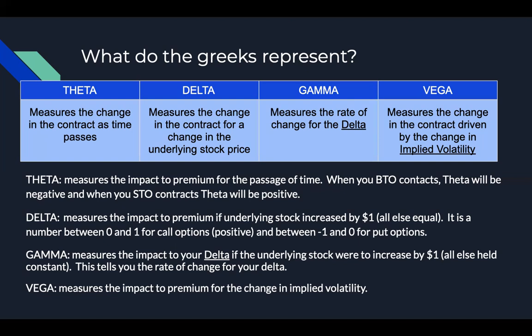Theta is what we'll start things off with. This is pretty straightforward — it essentially measures the change in the contract as time passes. This is like the cost of swinging the option overnight; that's essentially the theta. If you're doing a buy to open, it's always going to be a negative value. If you're going to sell to open contracts, theta is going to be a positive value.